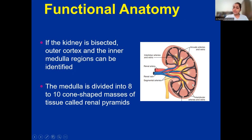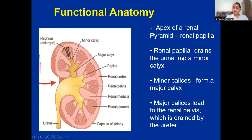Those are the two regions we can identify clearly. The medulla is also divided into eight to ten corn-shaped masses known as renal pyramids. You can see these corn-shaped masses — they have a small apex and a base. The apex of these renal pyramids is known as the renal papilla, and the renal papilla drains urine into the minor calyx.